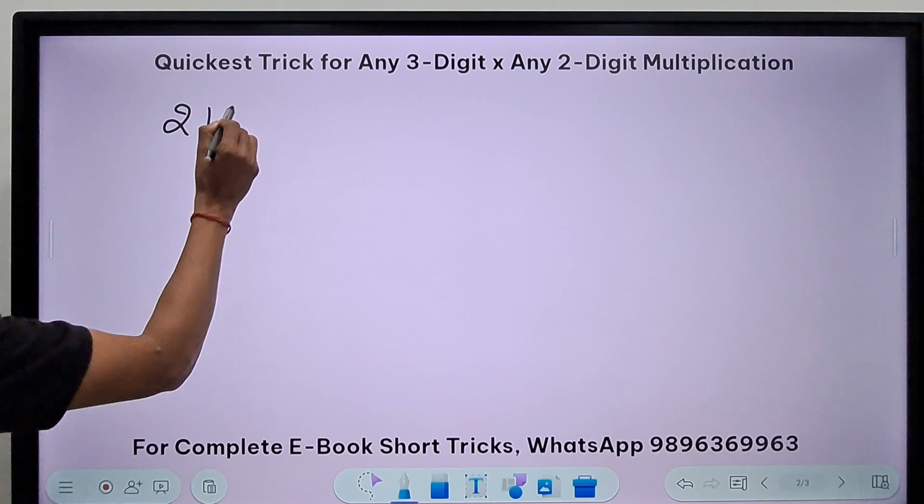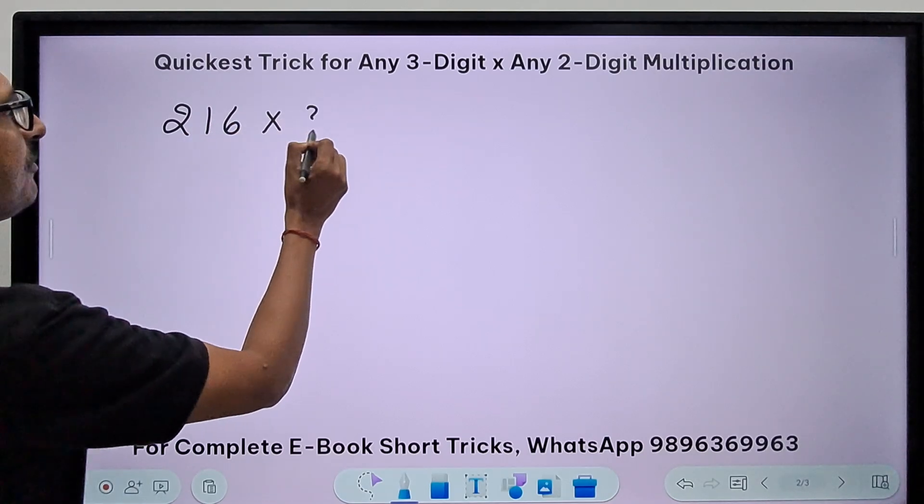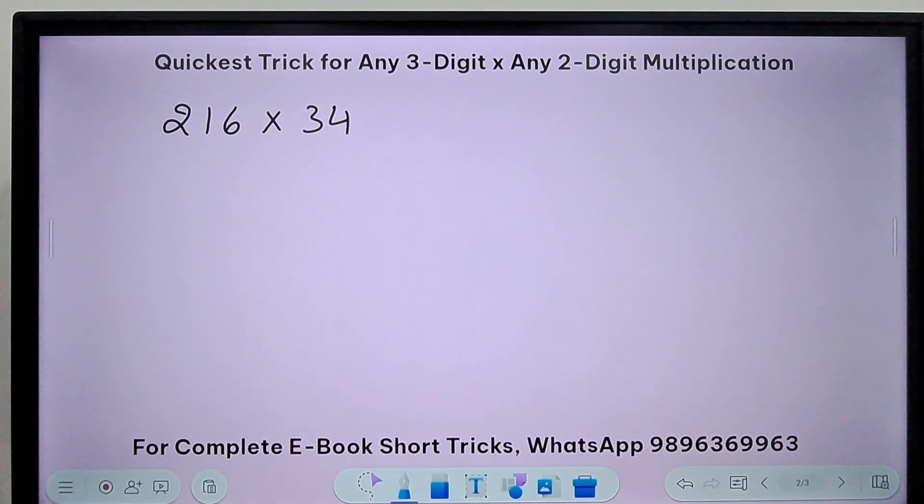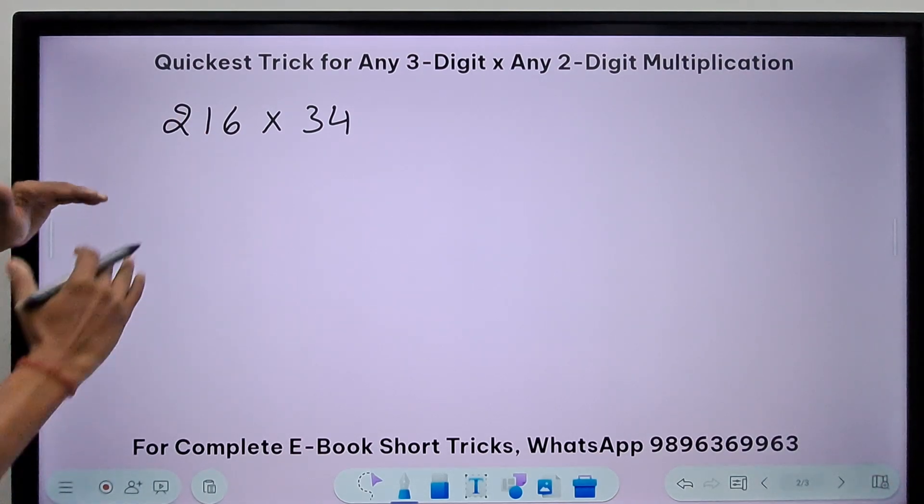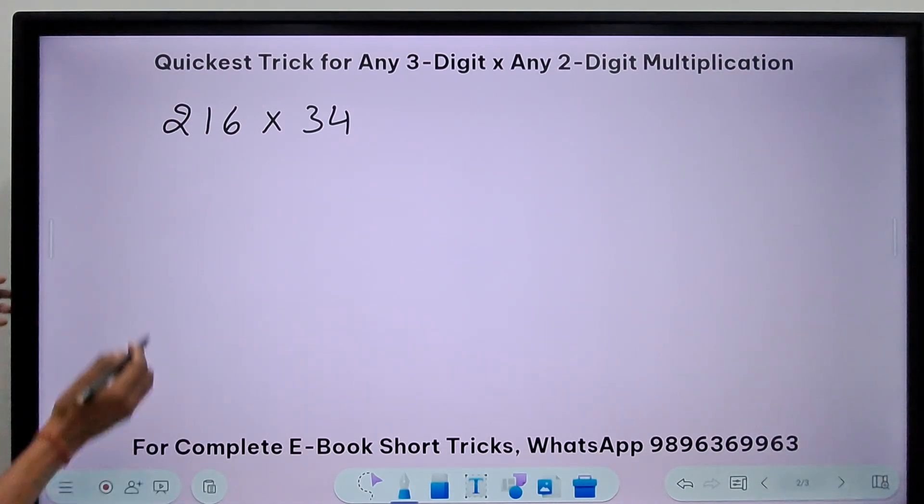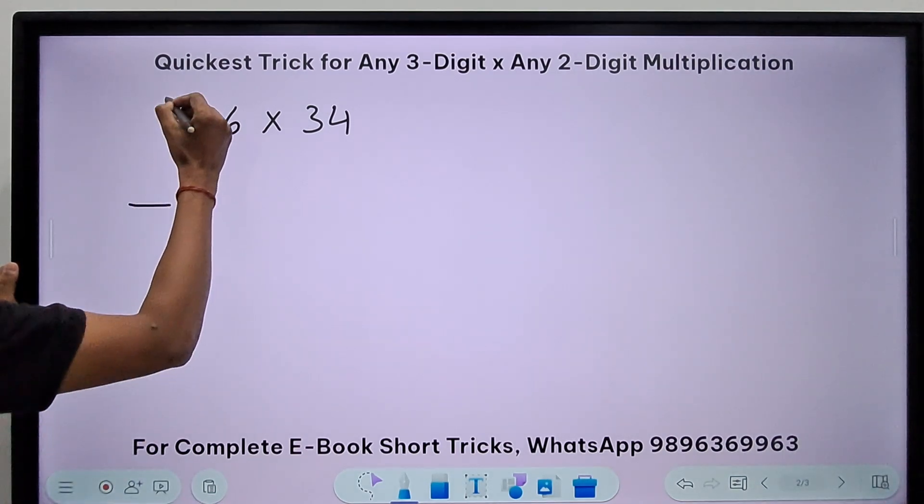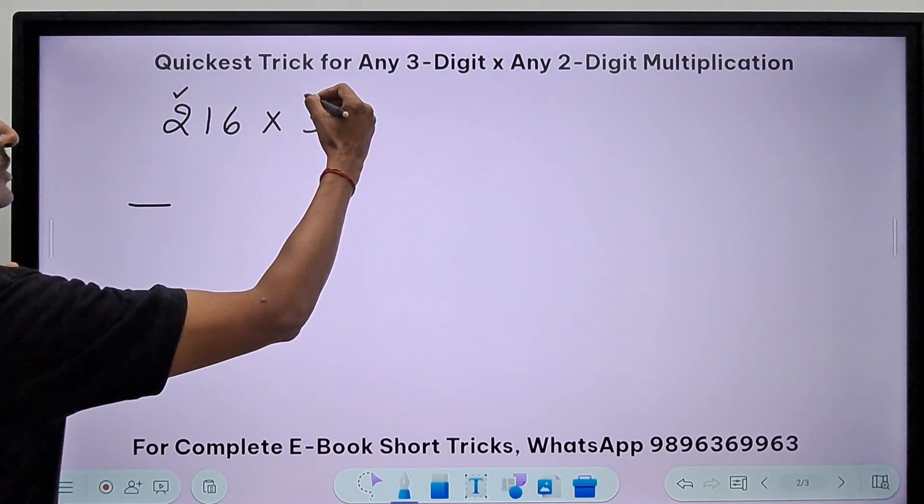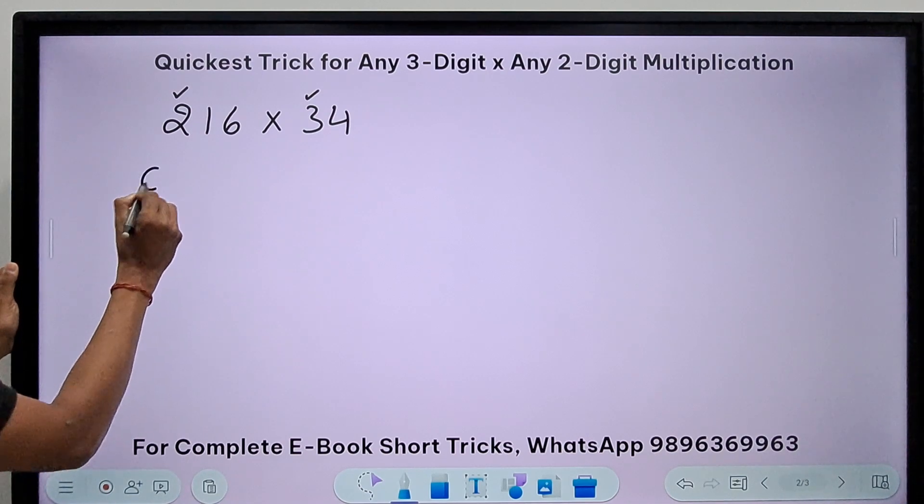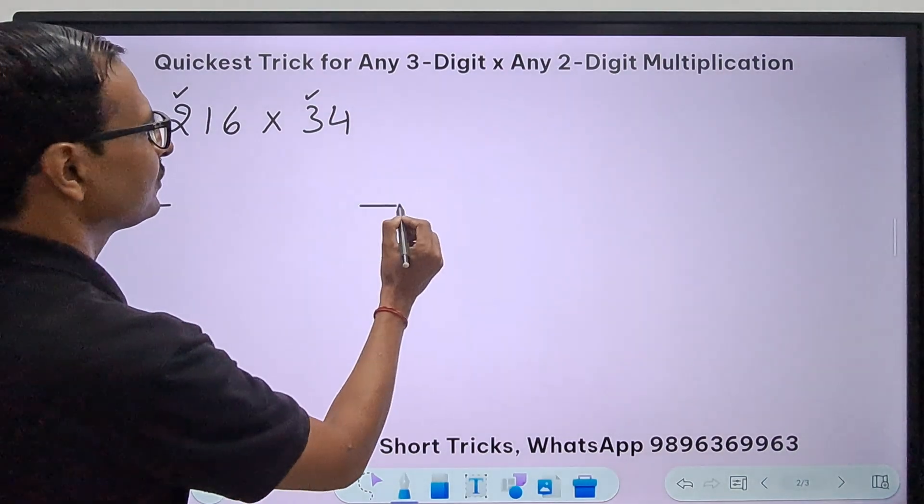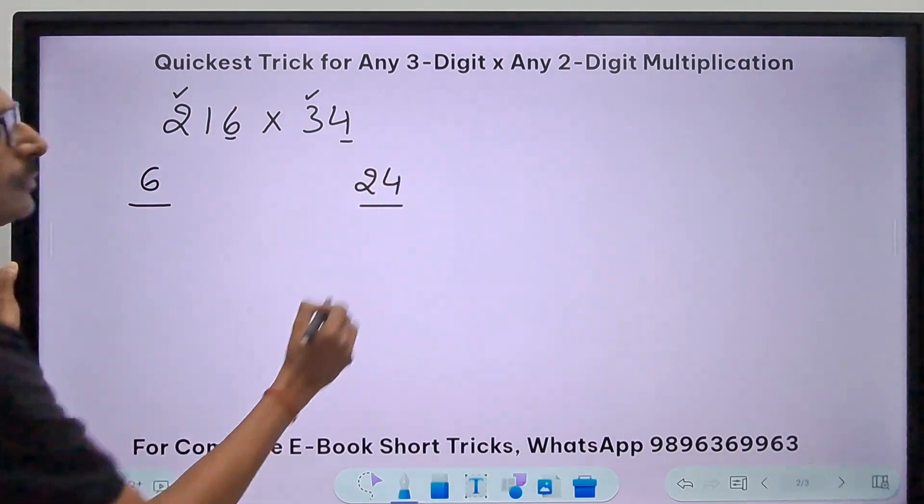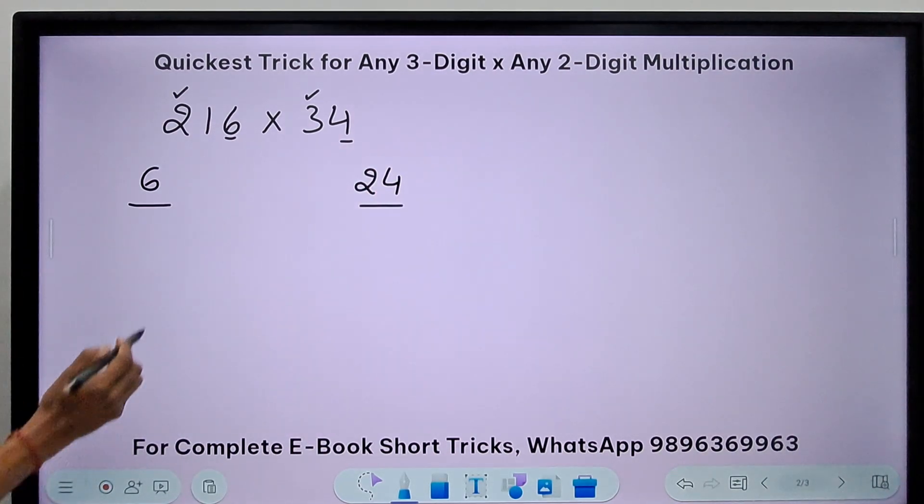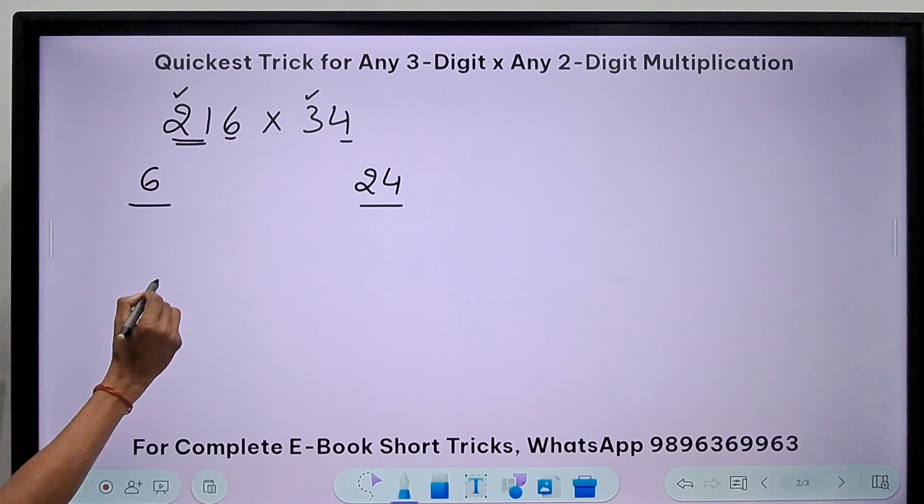The first example is 216 times 34. I have taken smaller digits here so that the understanding part is ensured. The first digit is the product of 2 and 3, that is 6. The last digit will be the product of 6 and 4, which is 24.